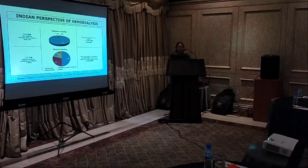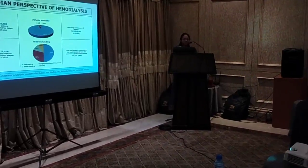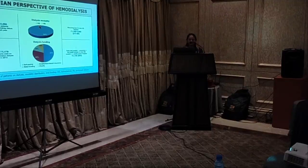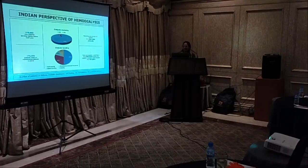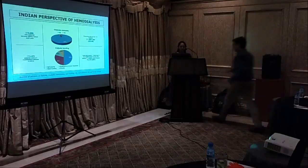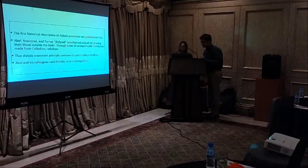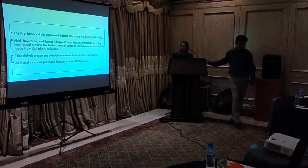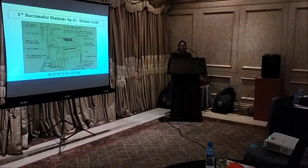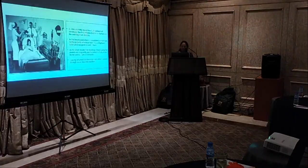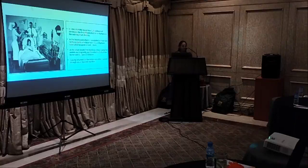Coming to the history of dialysis, we have achieved some milestones in RRT so far. The first dialysis description was published in 1913 by Abel, Rowntree and Turner, who dialyzed anesthetized animals by directing their blood outside the body through tubes of semi-permeable membranes made from collodion, which is cellulose. That dialysis treatment principle continues to be used in today's dialysis machines. Abel and his colleagues used hirudin as an anticoagulant. In 1943, Dr. William Kolff introduced the rotating drum dialyzer.